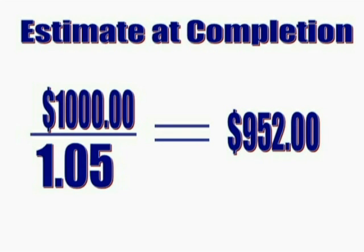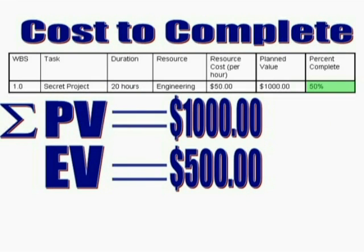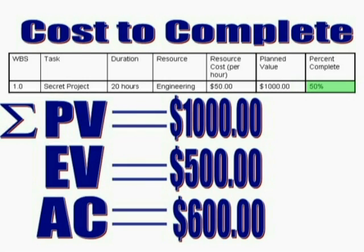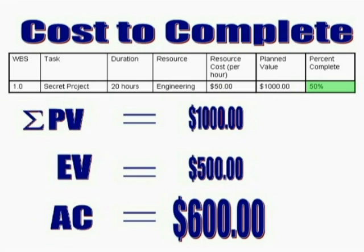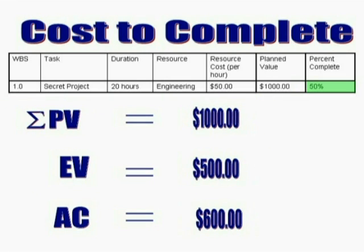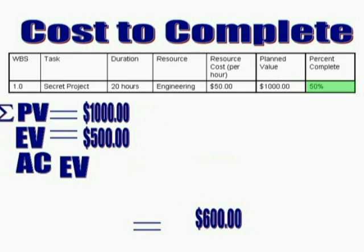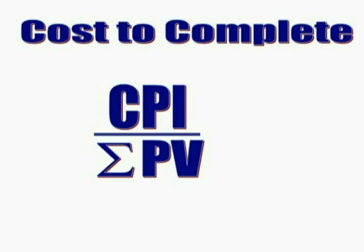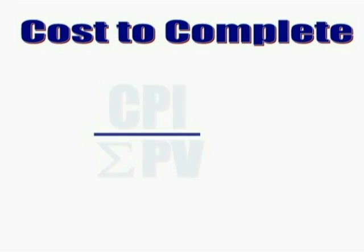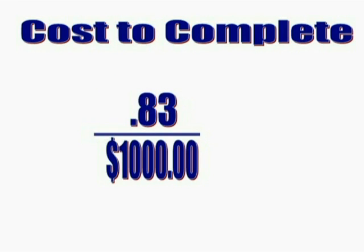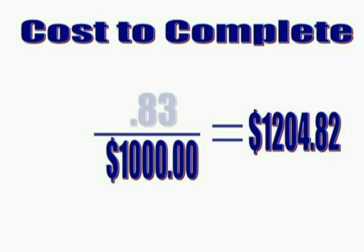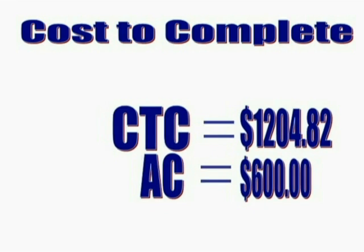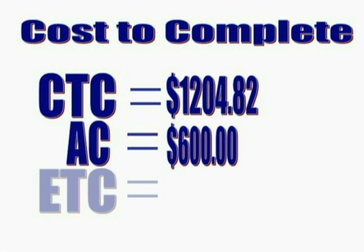Finally, you need to know how much of your reserve to transfer to the project budget, which means you'll need to calculate the cost to complete, or CTC. Look at the percent complete of the project as a whole — in this case, 50% of WBS items are complete. Using our $1,000 budget, we have an earned value of $500. If our actual cost is $600, we have a CPI of 0.83. We calculate our estimated completion using the CPI divided by the budget, or plan value, which equals $1,204. We've already spent $600, so we estimate it will cost $604 to complete the project.